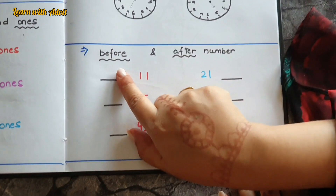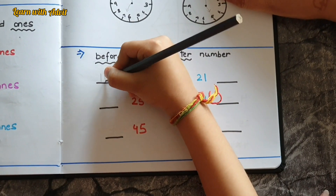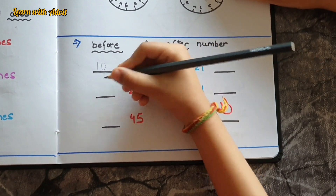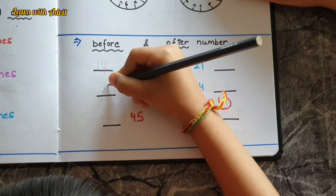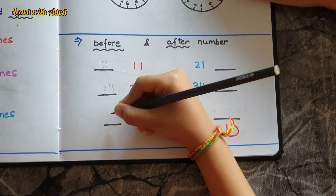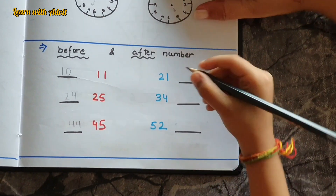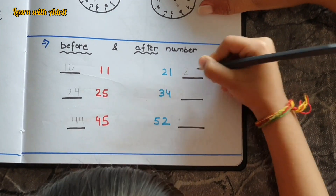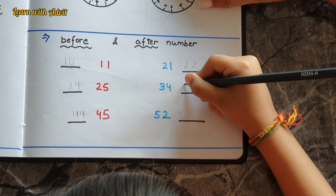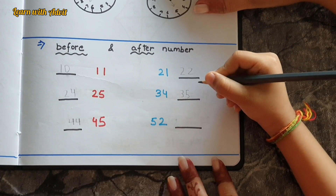Here you have to write the before and after numbers. Before 11 — tell me. Before 25? 24. Before 45? 44 — yeah! After 21? After 34? 35. And after 52? 53 — good job!